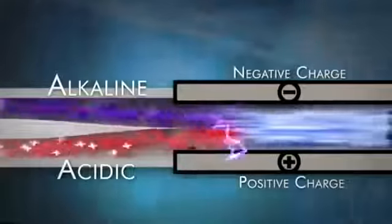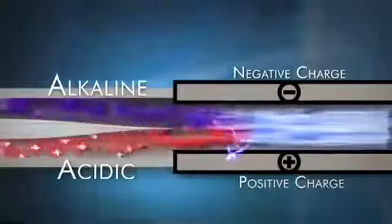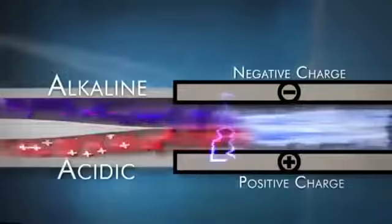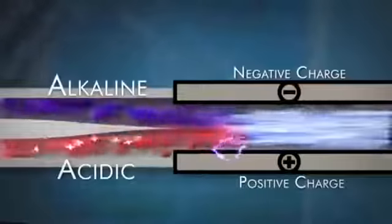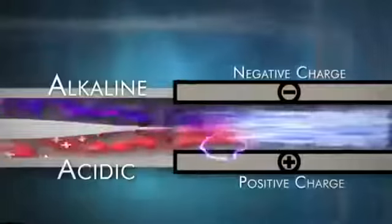Titanium is used because it is a very dense metal and is a great conductor of electricity. Platinum is a great durable conductor of electricity, and it's applied on top of the titanium to keep the titanium from breaking down in water during electrolysis.